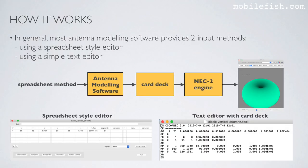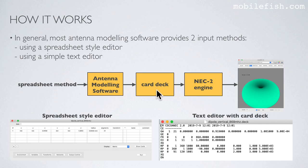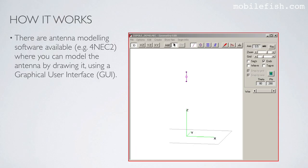In general, most antenna modeling software provides 2 input methods: using a spreadsheet style editor or using a simple text editor. If you use the spreadsheet method, the antenna modeling software reads the spreadsheet and outputs a card deck, which is then used as input for the NEC2 engine, which outputs the results. Some antenna modeling software, like 4NEC2, also allow you to model the antenna by drawing it using a graphical user interface.